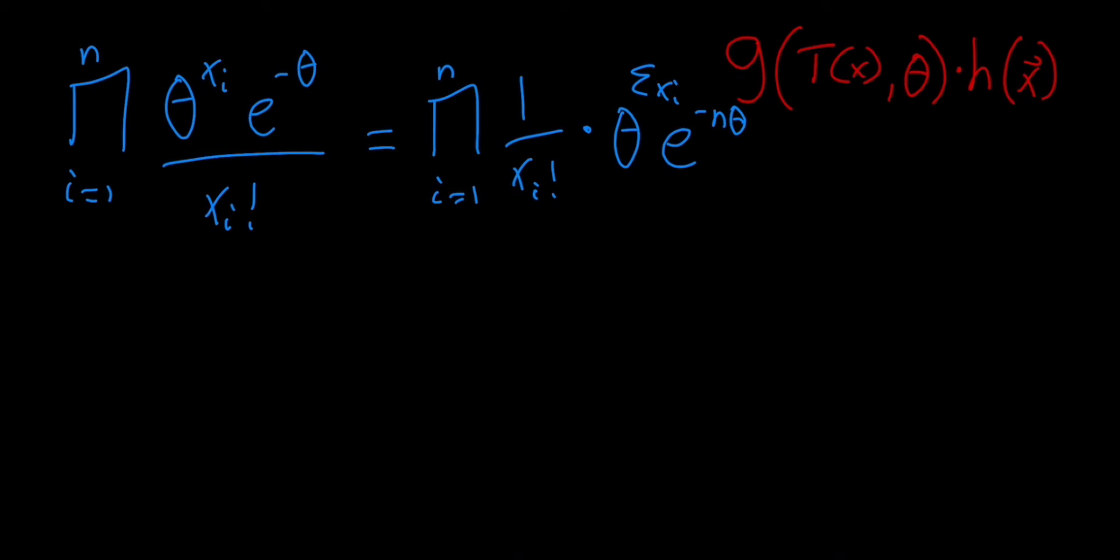So now what we see is that we have two parts here. This is a function of only our data, because it's only a function of the xi. So I'm going to call this our h.